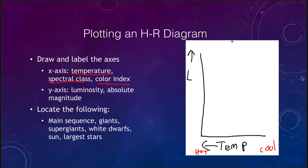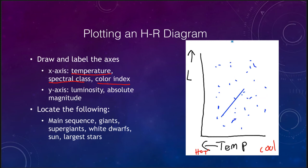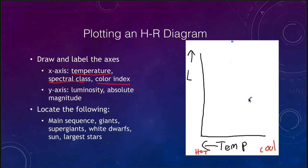When we start to plot stars, we do not find them randomly scattered — that would indicate no relationship. Instead, there is a very distinct pattern. When we plot temperatures versus luminosities, we find the main sequence runs from the upper left and curves down to the lower right, shown as the blue line.